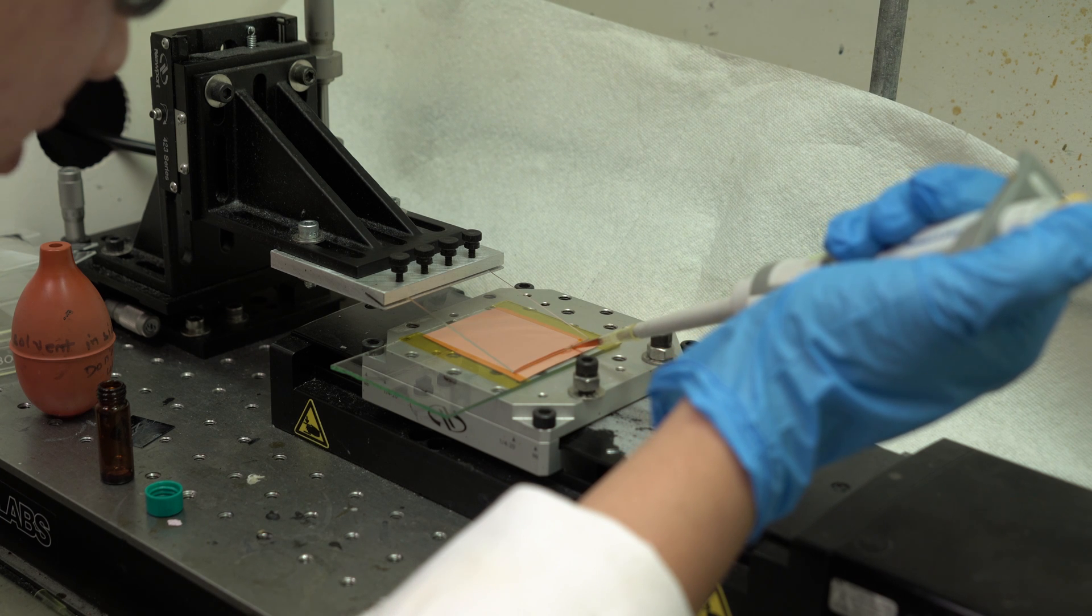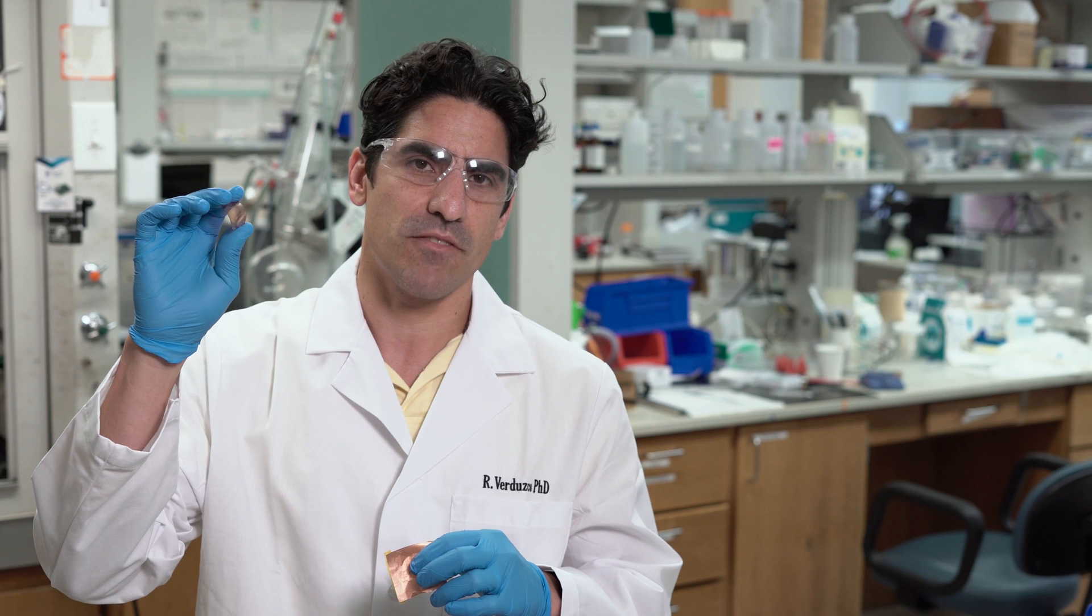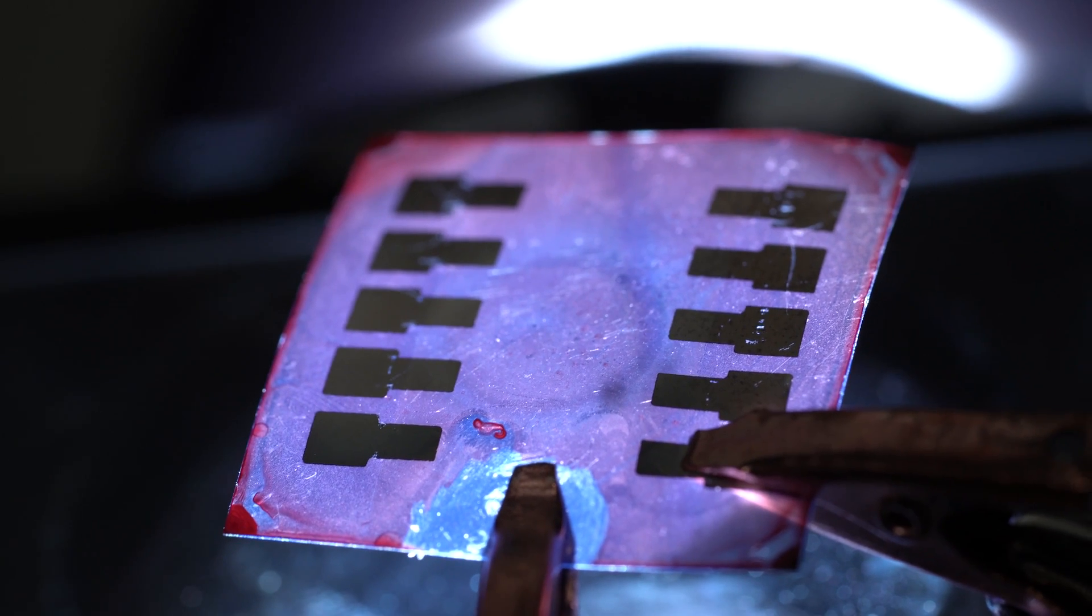This very thin red layer that's painted on this plastic flexible surface is the photovoltaic device.